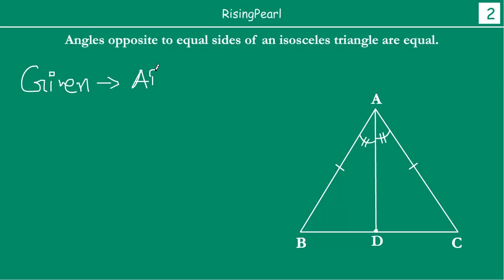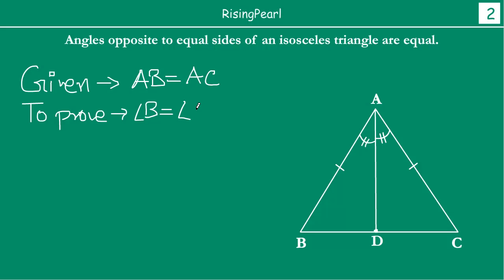It was given that AB is equal to AC, because ABC is our isosceles triangle. Now, we have to prove that angle B is equal to angle C, because angle B and angle C are opposite to these equal sides. As part of our proof, we have drawn an angular bisector AD of angle A, which intersects side BC at point D.